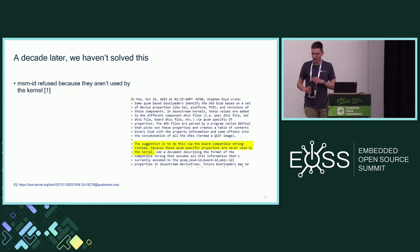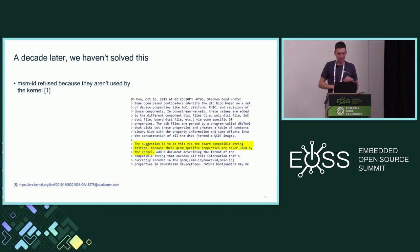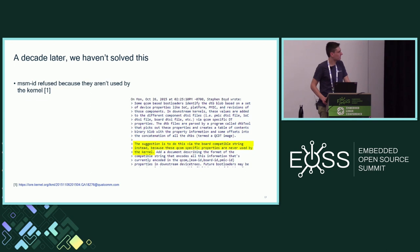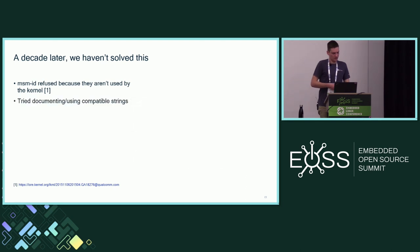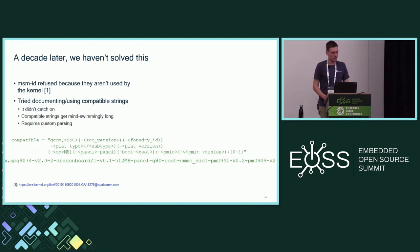A decade ago or longer, we tried to upstream the MSMID, but it was rejected because the kernel doesn't use the MSMID. There was a feeling that the kernel should always use fields described in the DTB. The consensus back then was that if we were going to use the MSMID, the kernel should care about it as well. So we tried documenting and using compatible strings, which is the current upstream approach.